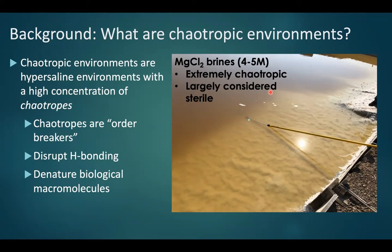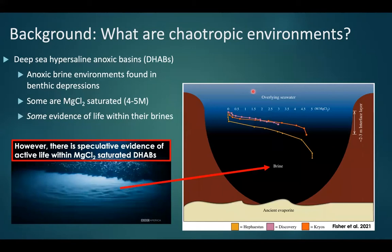A common environmental chaotrope would be chloride. In a very high concentration of chloride, this will inhibit cellular function via protein denaturation and enzyme inhibition at a certain concentration. For example, in this magnesium chloride brine in Southern California, the upper limits are largely considered sterile.